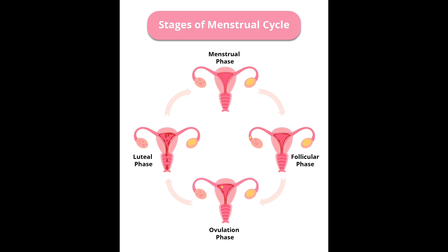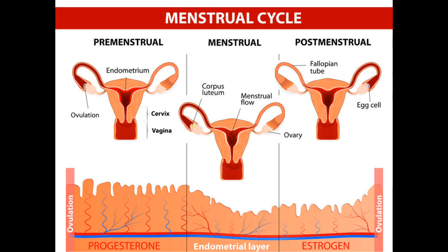Amenorrhea: the absence of menstrual periods. This is considered abnormal except during prepuberty, pregnancy, lactation, and post-menopause. Possible causes include low or high body weight and excessive exercise.